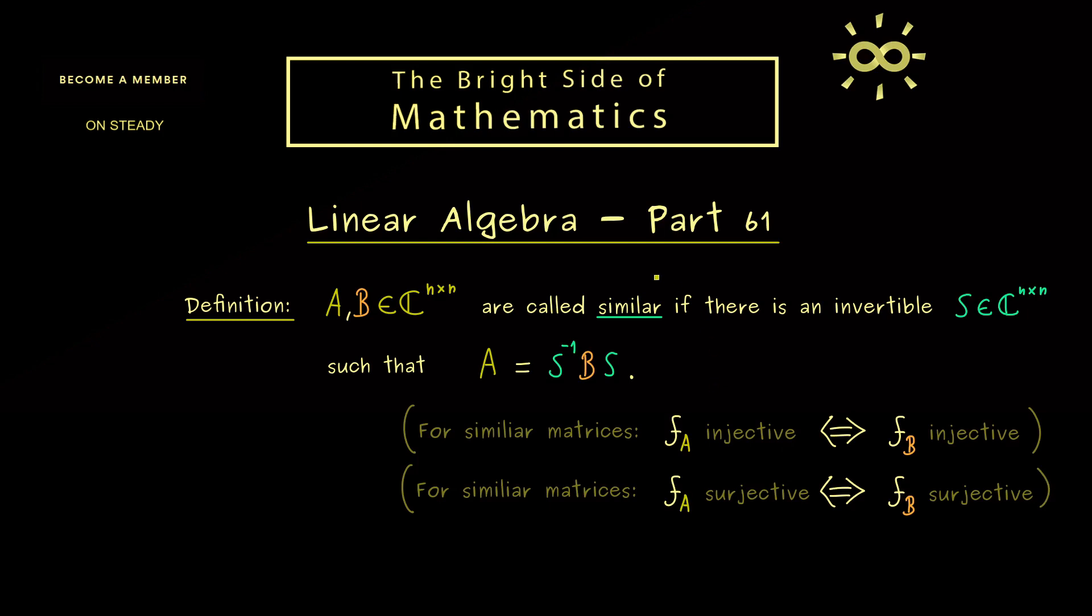Hence, you already can remember, similar matrices give very similar linear maps. And indeed, soon we will show that both linear maps are connected by a so-called change of basis.